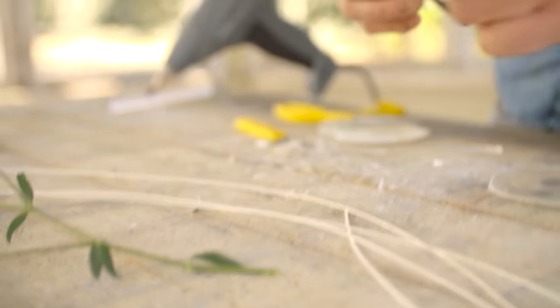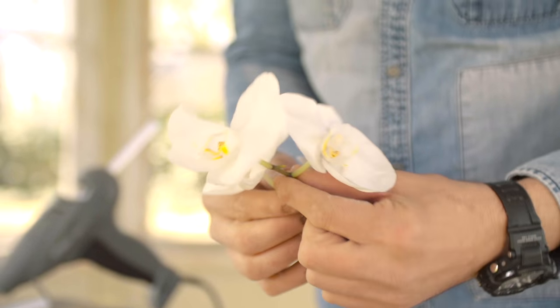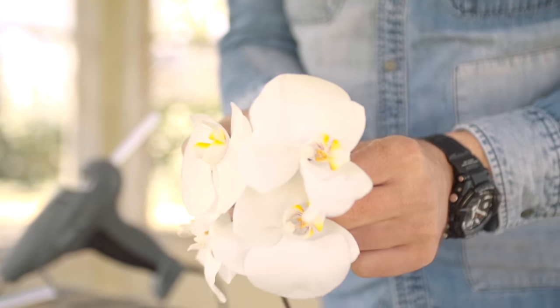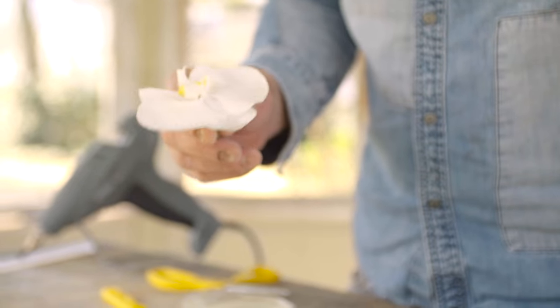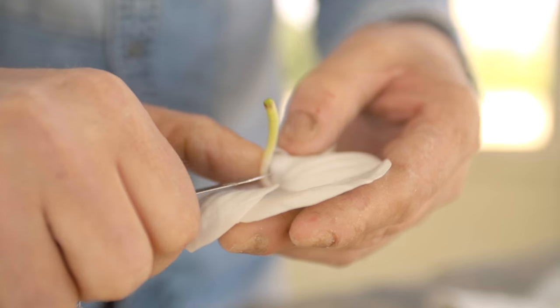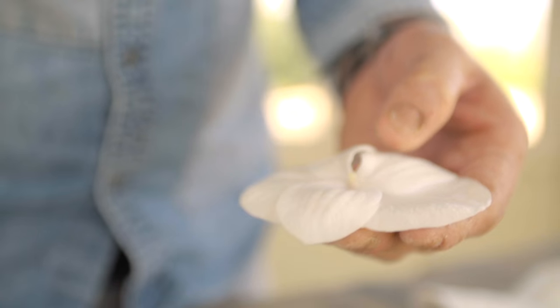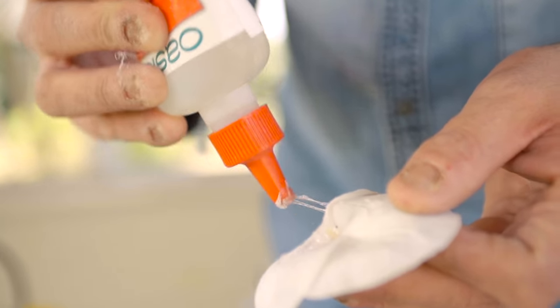Then it's time to work with our flowers. So we're going to use beautiful phalaenopsis. In this case, we're simply going to use one and cut it off really short. So we're just going to give it some glue.